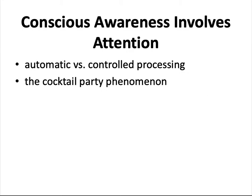Conscious awareness involves attention. At any one time, each person can be conscious of only a limited number of things. Attention is based on automatic versus controlled processing. Things like driving, walking, and riding a bike are automatic after we learn how to do those actions. The moment you start to think about those actions while doing them, it becomes controlled processing.